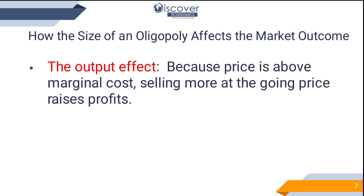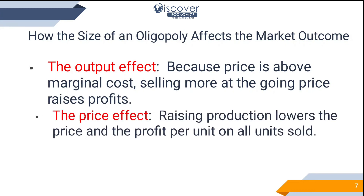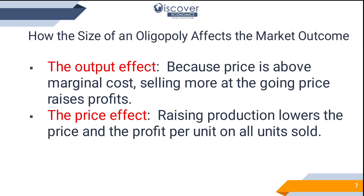Regarding how the size of an oligopoly affects market outcomes: the output effect means that because price is above marginal cost, selling more at the going price raises profits. For the price effect, when a new product enters the market its price is initially very high, but gradually as more products come to market, prices fall — this is the price effect.